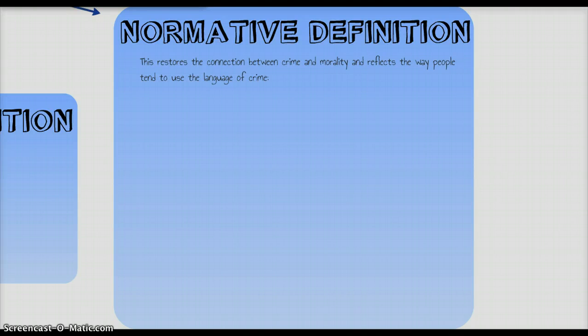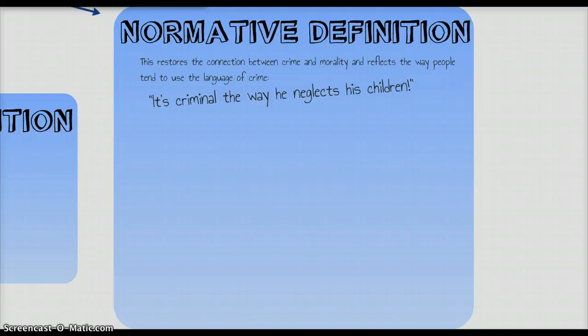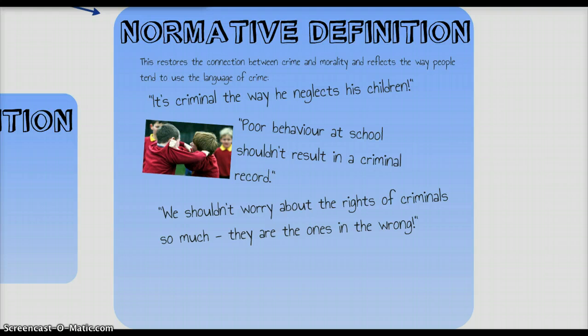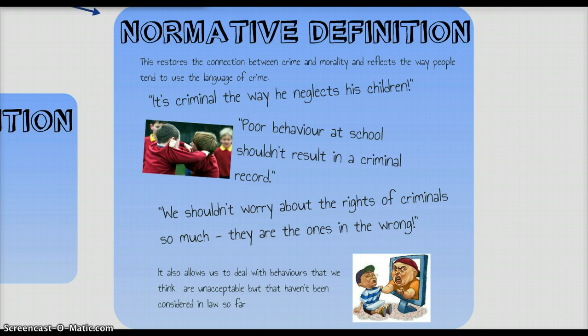Here's the alternative approach — the normative definition. This restores the connection between crime and morality, and it reflects the natural way people tend to use the language of crime — saying things like 'it's criminal the way he neglects his children,' or 'poor behaviour at school shouldn't result in a criminal record.' Normative definitions see crime not as a consequence of legislation, but as a consequence of falling below the acceptable standard of behaviour. It also allows us to think about unacceptable behaviours the law hasn't had the chance to consider yet — such as cyberbullying.